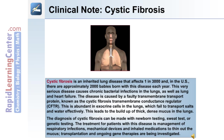In patients with cystic fibrosis, the CFTR protein fails to transport salts and water effectively, leading to the buildup of a thick, dense mucus in the lungs. Diagnosis can be made with newborn testing, a sweat test, or genetic testing. Treatment involves management of respiratory infections, the use of mechanical devices and inhaled medications to thin out the mucus. Transplantation and ongoing gene therapies are also being investigated.